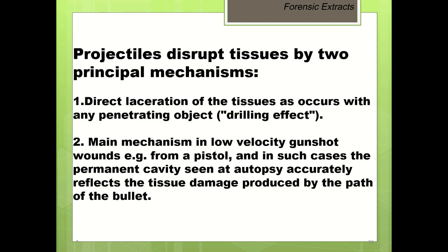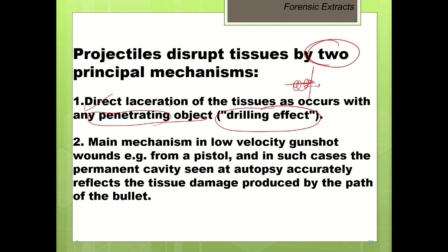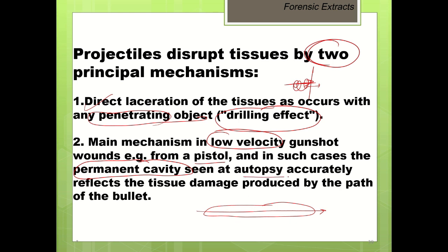The projectile disrupts tissue by two principal mechanisms. The first is drilling effect — direct laceration of tissues occurs because of this penetrating object. The bullet penetrates into the tissues, creating a drilling effect, so lacerations and local trauma are seen. This is the main mechanism in low velocity gunshot wounds like pistols. There is cavity formation, and the cavity — the permanent cavity — can be seen at autopsy, reflecting local tissue damage along the bullet's path.